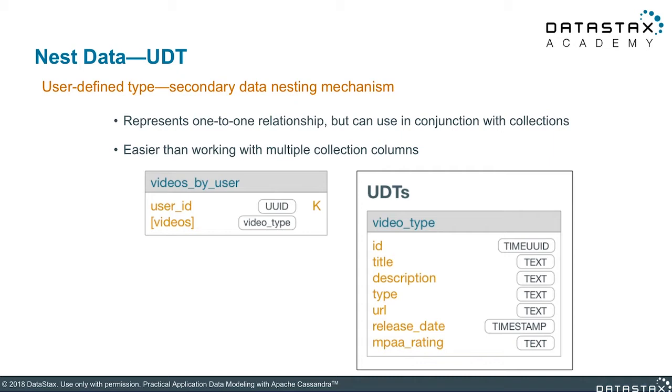For example, we took our videos and turned them into a videos user-defined type with fields like ID, title, description, and so on. We then put all those videos in a collection column in the videos by user table. I'll admit this is a slightly contrived example — that's a lot of values to have in one user-defined type with a single partition key. But if you want to, go ahead. Really this is more for lightweight situations, like sticking an address inside of a user table.